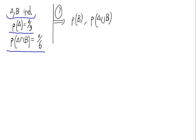We know that as A and B are independent, we have that the probability of the intersection between A and B is equal to the multiplication of their probabilities.